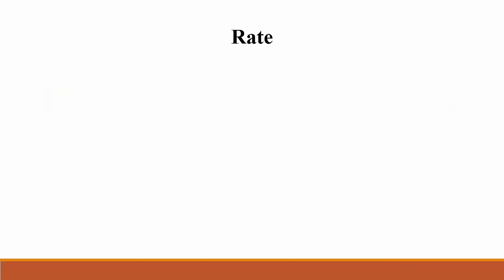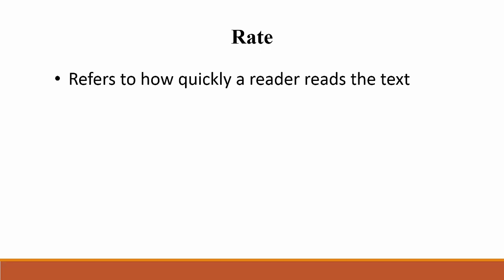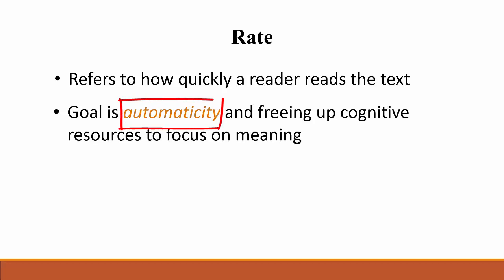Now let's move on to rate. Rate refers to how quickly a reader reads the text. Fluent readers can identify words immediately, seemingly instantaneously. In the reading world, we call this automaticity. A reader who reads with automaticity can read the words on the page without a conscious awareness of applying any skills. Being able to recognize words with automaticity means that cognitive resources can then be freed up to concentrate on the meaning of the text.